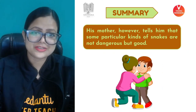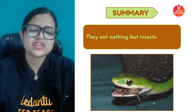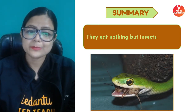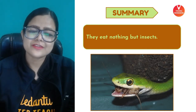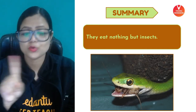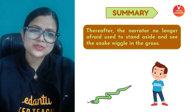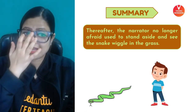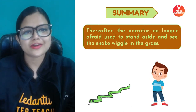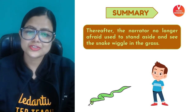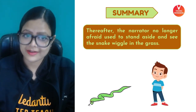His mother tells him that these snakes eat nothing but insects and do not harm humans. After learning this from his mother, the narrator no longer gets afraid. He is used to standing aside and watching the snake wiggle in the garden peacefully.